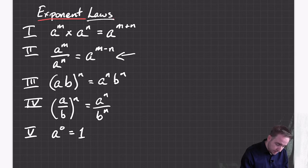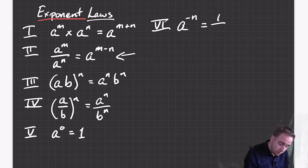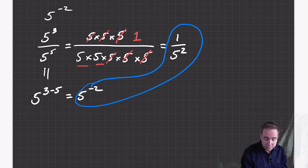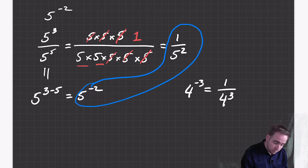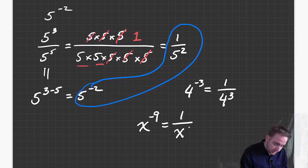So you can add that and it becomes yet another rule: something to the power of negative n, whatever that number is, is one over whatever that number was to the n. This will work for all sorts of numbers. Four to the power of negative three is one over four to the three. It doesn't even have to be a number — x to the power of negative nine is one over x to the nine. And negative three to the negative six is equal to one over negative three to the six.